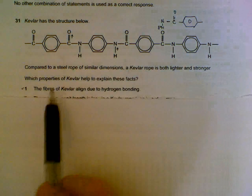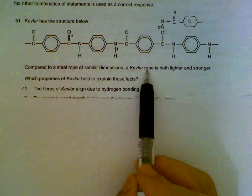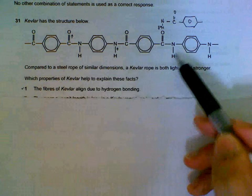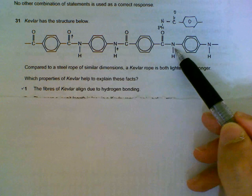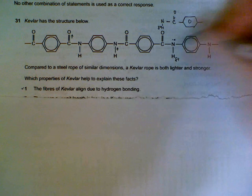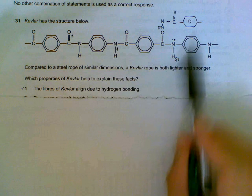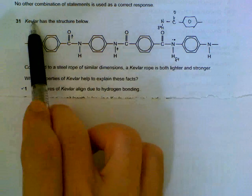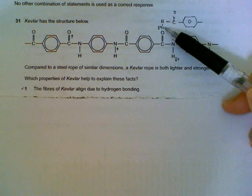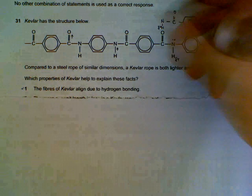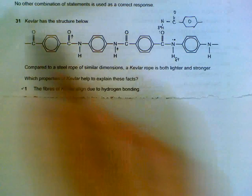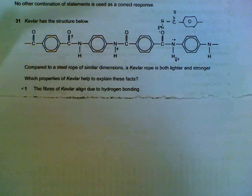Number 31: Why is Kevlar rope lighter and stronger than steel rope? You can see that this hydrogen is joined to a nitrogen, so there's a chance of hydrogen bonding. If you imagine another strand of Kevlar just above and align them, the partial positive hydrogen can be aligned with the lone pairs on the oxygen here. We repeat this pattern and you can see that they actually hold together quite tightly due to the strong hydrogen bonds.